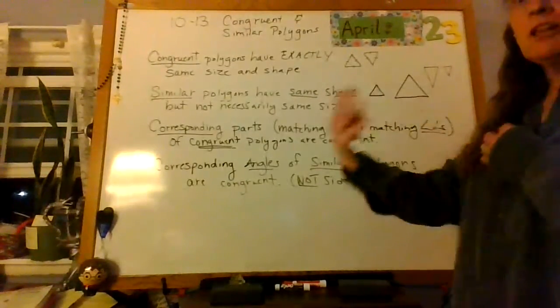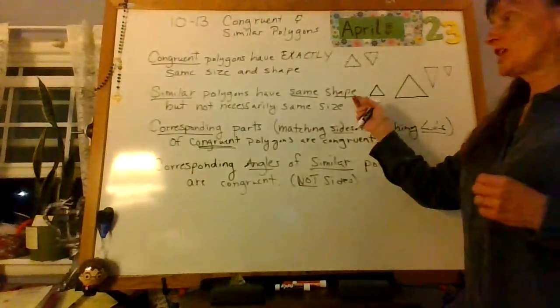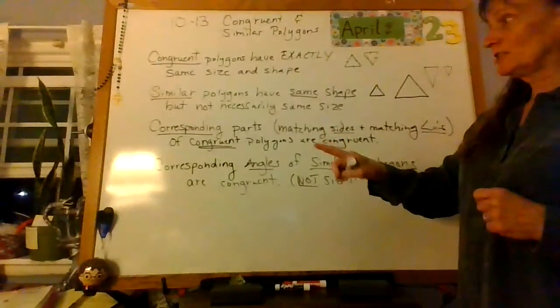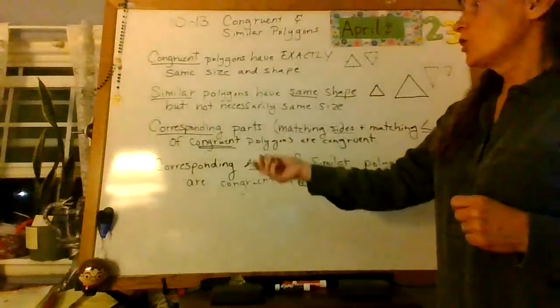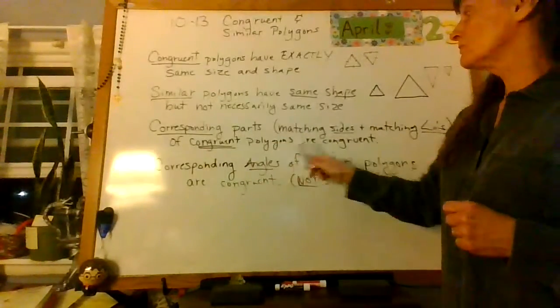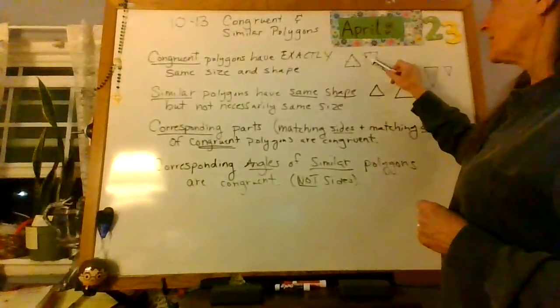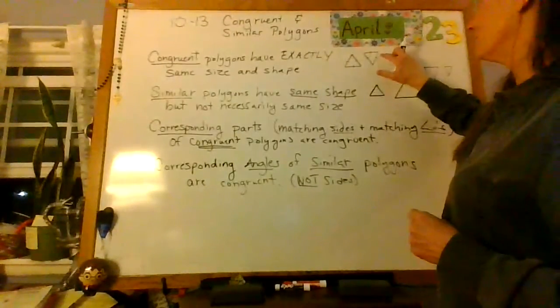That means close to, right? So, the shape is the same, but not necessarily the same size. All right. So, we have two different things to look at here. Corresponding parts of congruent polygons are congruent. So, if this corresponds with this, they're the same.